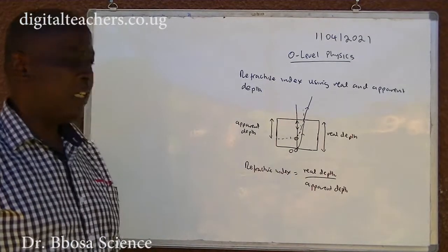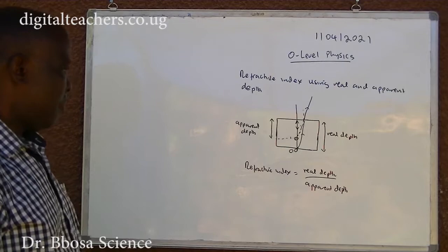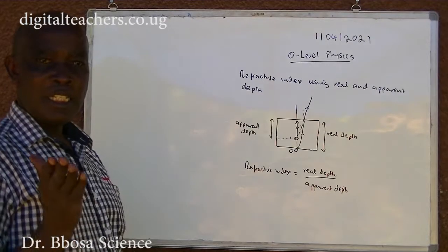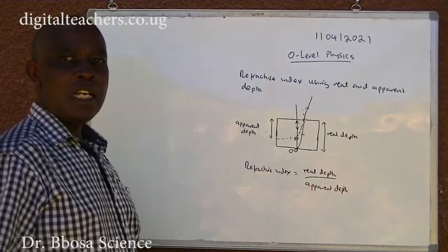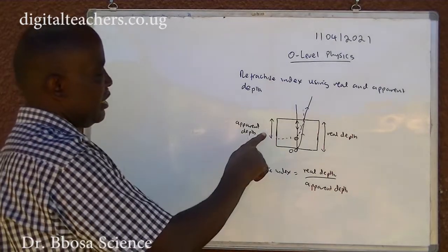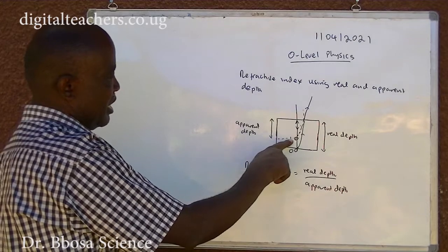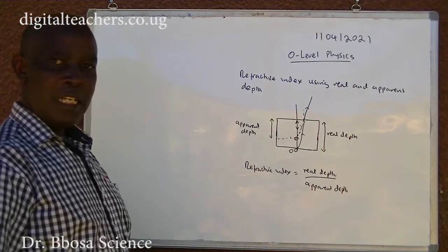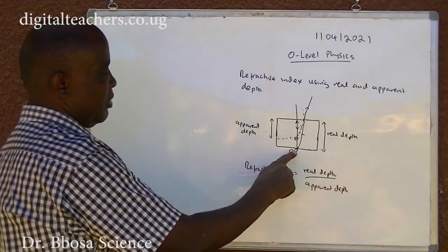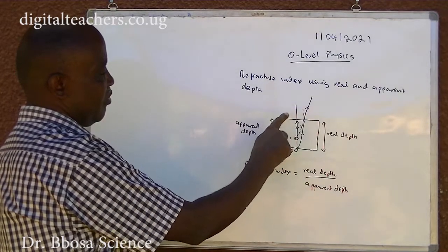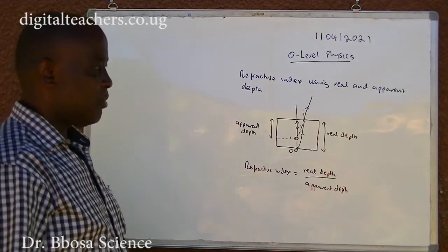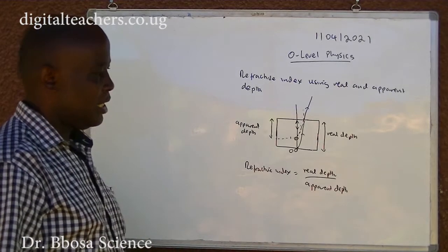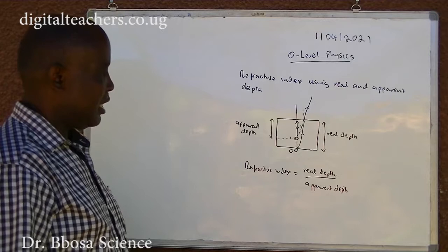Refractive index using real and apparent depth. An object placed below the glass block is seen as if it is raised at point I. The distance between the image and the surface of the glass block is the apparent depth. The distance between the object and the surface of the glass block or the thickness of the glass block is the real depth. The refractive index is given by real depth over apparent depth.